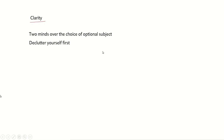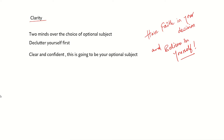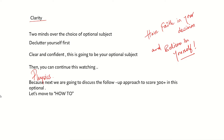Once you have convinced yourself with the choice of optional subject and you are clear and confident, have faith in your decision and believe in yourself. If you have decided on physics as your optional subject, you can continue watching, because next we will discuss the follow-up approach to score 300 plus.